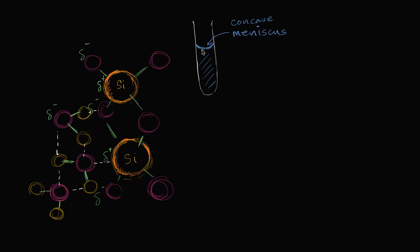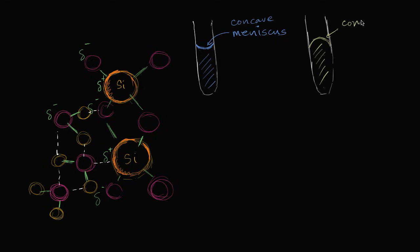And you might say, well, if this is a concave meniscus, are there any situations where we might have a convex meniscus? Sure, you can have a convex meniscus. If you were to take that same glass beaker, instead of filling it with water, if you filled it with mercury, you would get a meniscus that looks like this, where there's a bulge near the center when you're further away from the container. And so this is a convex meniscus.